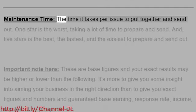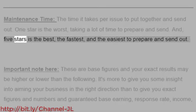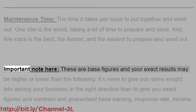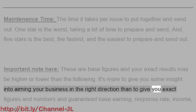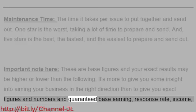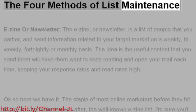Maintenance time measures the time it takes per issue to put together and send out. 1 star is the worst, taking a lot of time to prepare and send, and 5 stars is the best — the fastest and easiest to prepare and send out. Important note: these are base figures and your exact results may be higher or lower. It's more to give you some insight into aiming your business in the right direction than to give you exact figures and guaranteed base earning, response rate, income, or number of JV prospects.